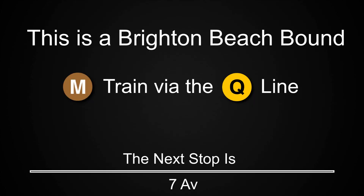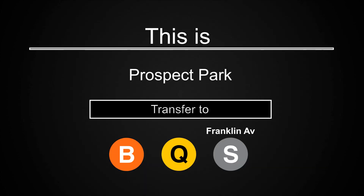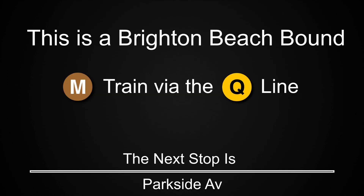This is a Brighton Beach-bound M train via the Q line. The next stop is 7th Avenue. This is a Brighton Beach-bound M train via the Q line. The next stop is Prospect Park. This is Prospect Park. Transfer is available to the B and Q trains and the Franklin Avenue shuttle. This is a Brighton Beach-bound M train via the Q line. The next stop is Parkside Avenue.